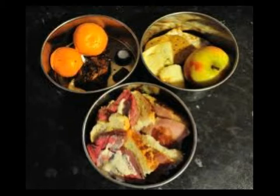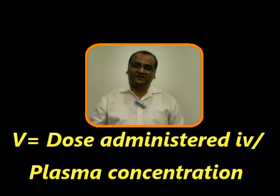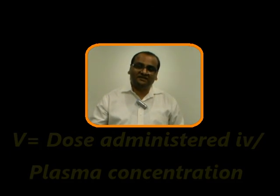If it were like a bucket, it would be very easy. But since the body is a multi-compartmental system, it becomes quite difficult for the drug to get equally distributed in all compartments. The apparent volume of distribution of the drug is calculated by the formula: total drug administered in the body divided by the plasma concentration. This value is what we call the apparent volume of distribution of the drug.